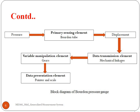In the block diagram, the pressure is sensed by the primary sensing element — the Bourdon tube — then converted into displacement with the help of data transmission elements, that is mechanical linkages. That displacement is converted via gears, which manipulate the signal, and with the help of the pointer and scale, the data is presented. The three steps are: stage one — primary sensing element; stage two — signal conditioning including data transmission and variable manipulation; and stage three — readout or terminating stage with data presentation using pointer and scale.